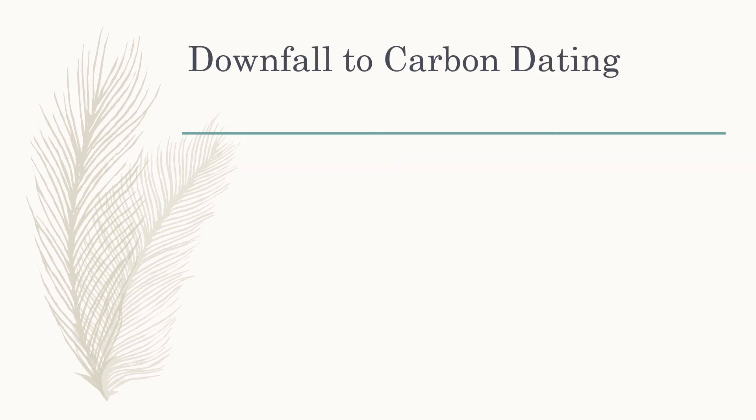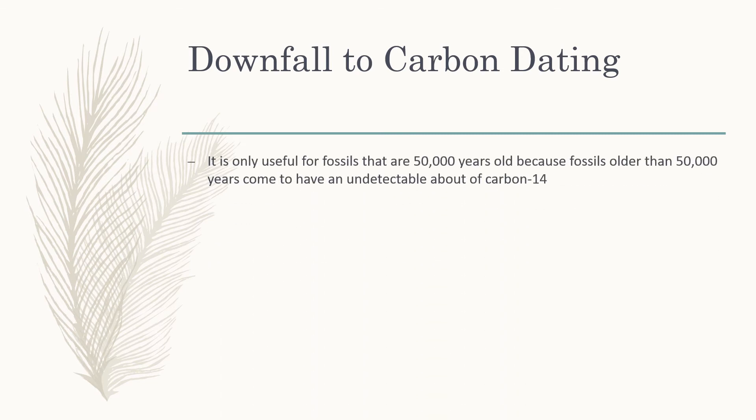The downfall of carbon dating is that it is only useful for fossils that are about 50,000 years old or less. After that point in time, carbon-14 becomes really hard to detect or undetectable, and scientists have to use other kinds of radioisotopes in order to date or age the fossil.